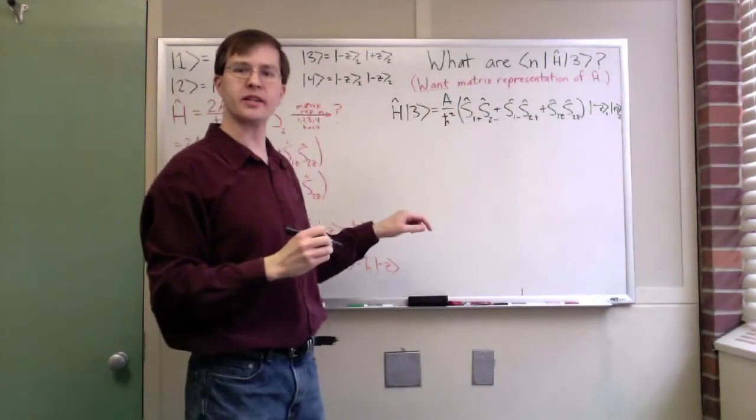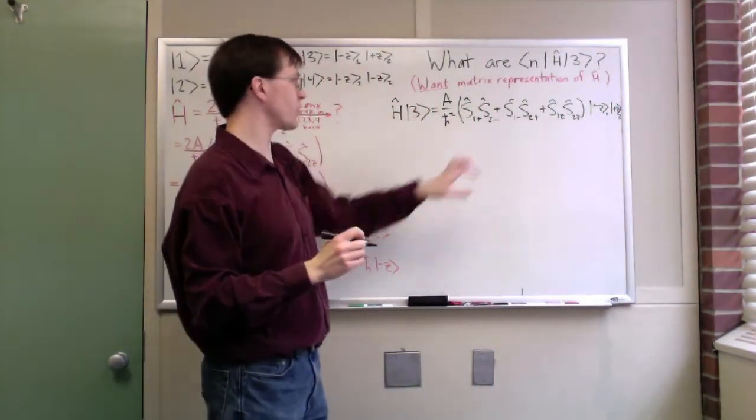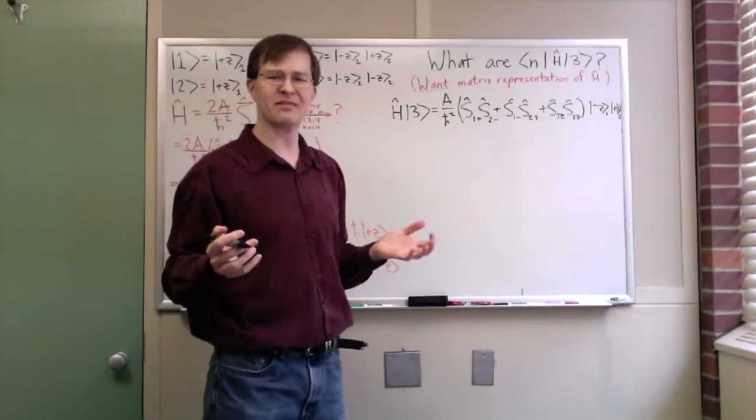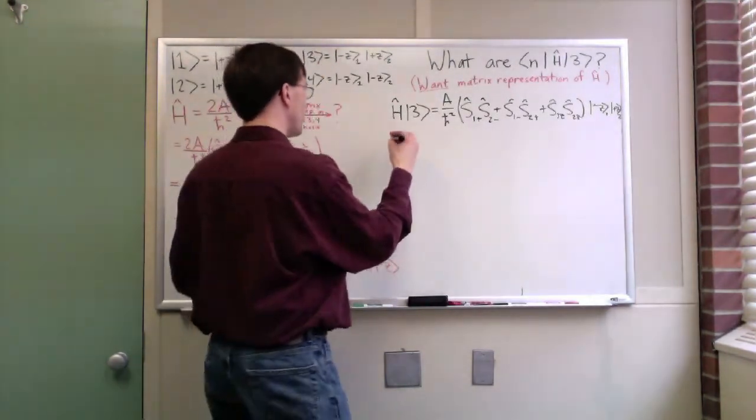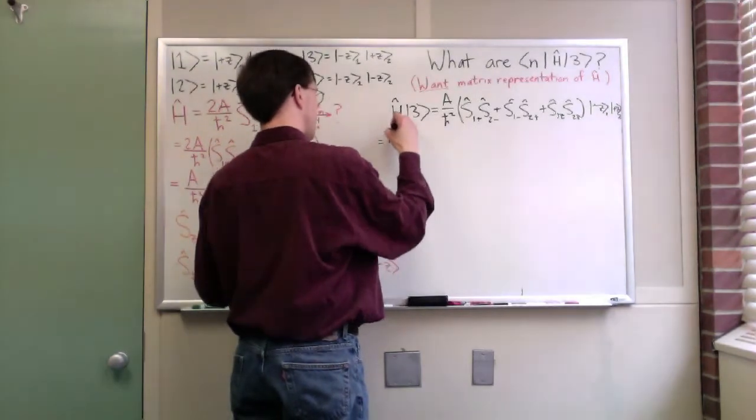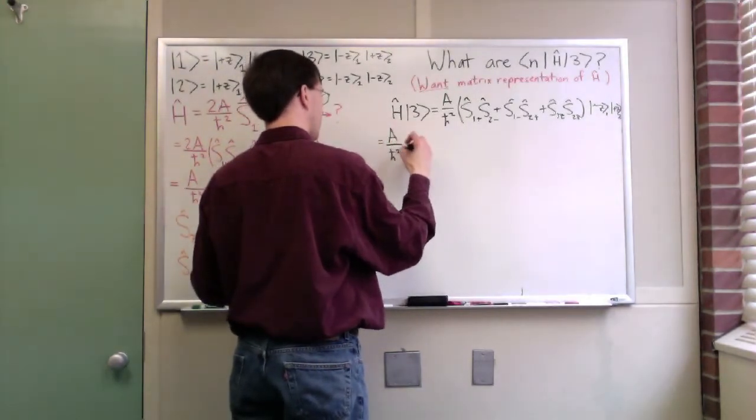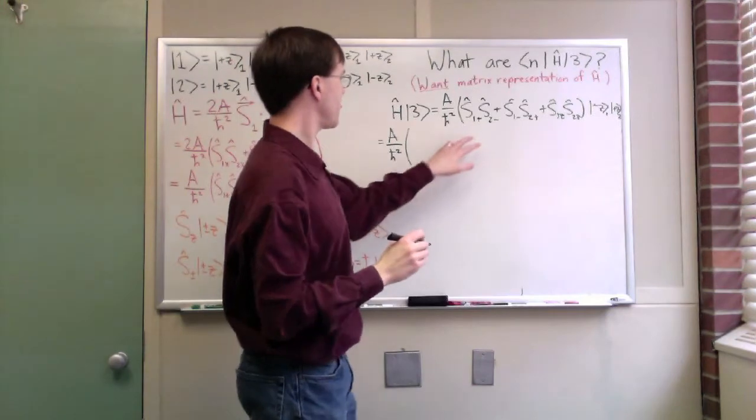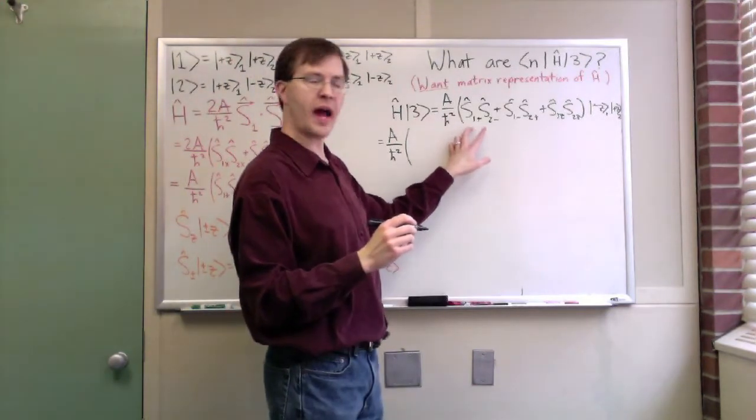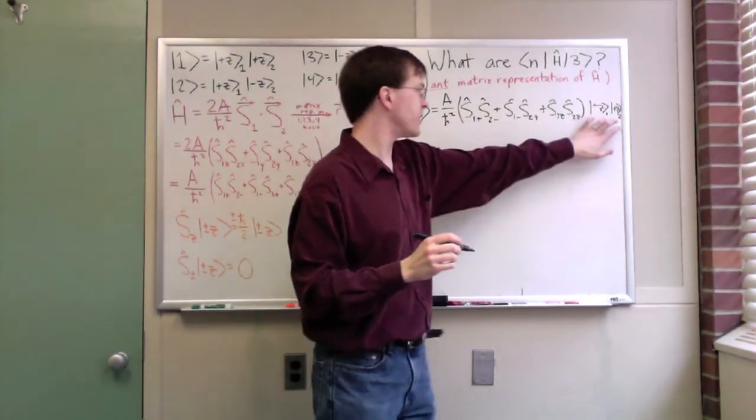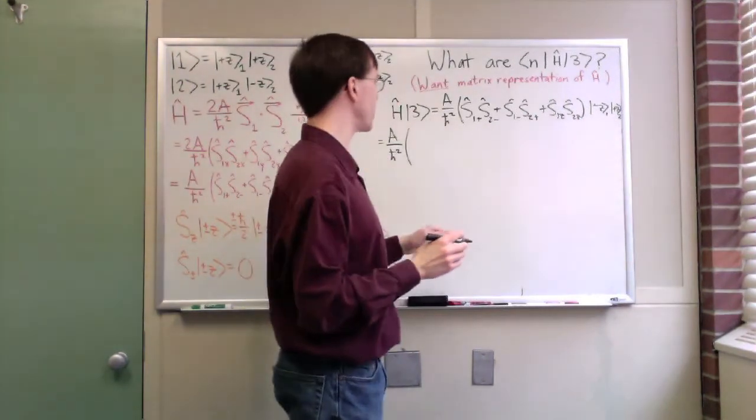I've got a over h-bar squared times S1 plus S2 minus plus S1 minus S2 plus, don't forget my hats because they're operators, plus S1z S2z. All applied to the minus z for particle 1 and plus z for particle 2 state. We're just acting on this with our operators. It's math, right? We just distribute this thing out.